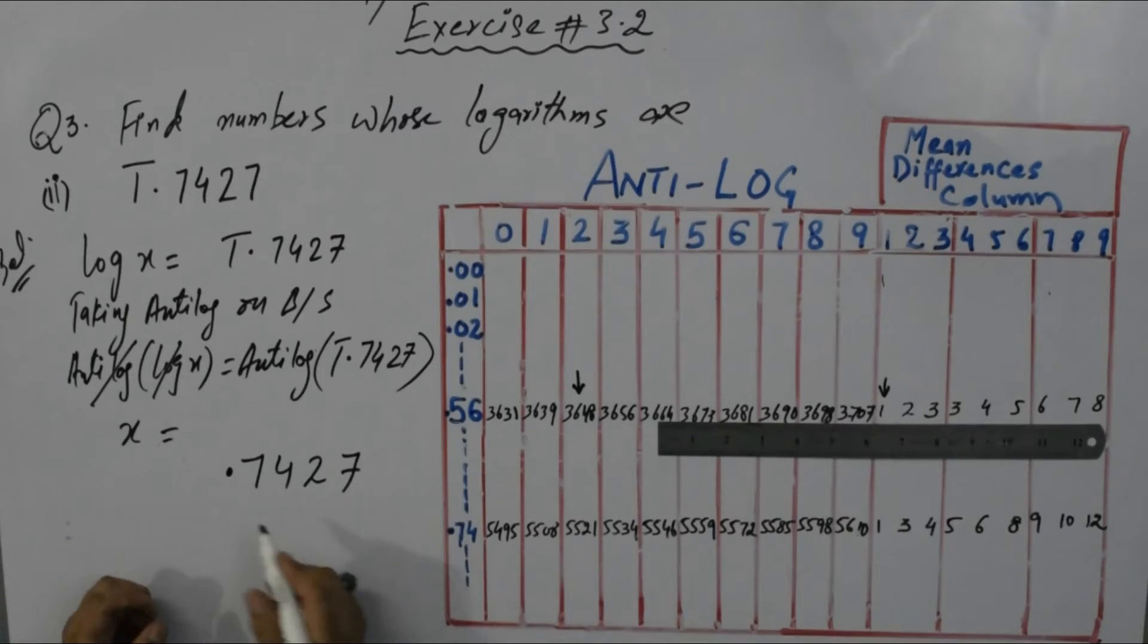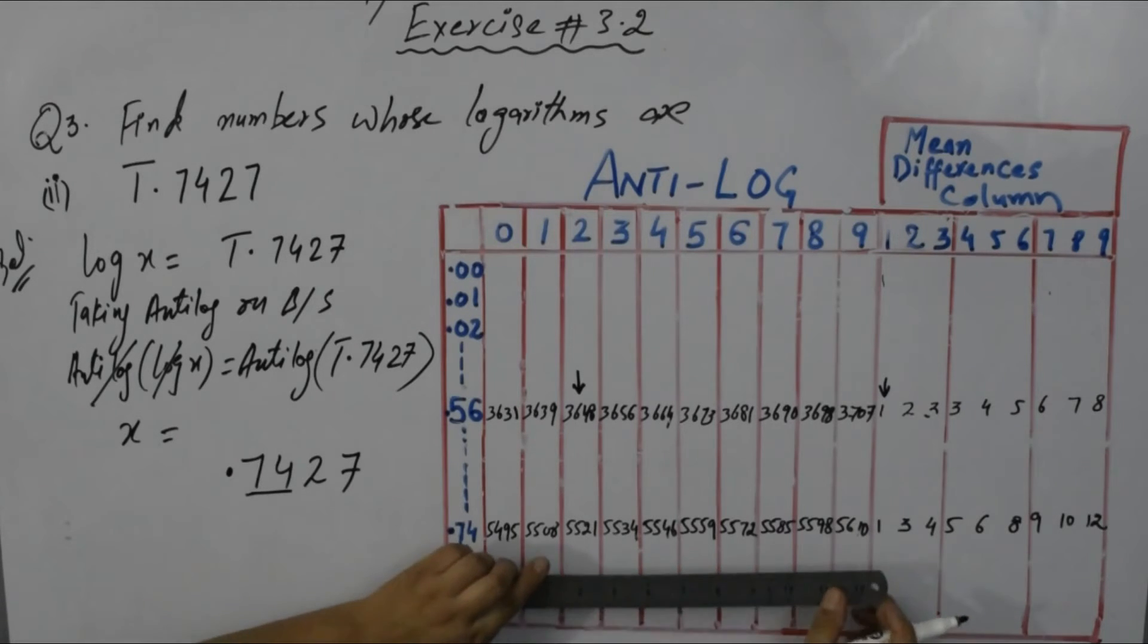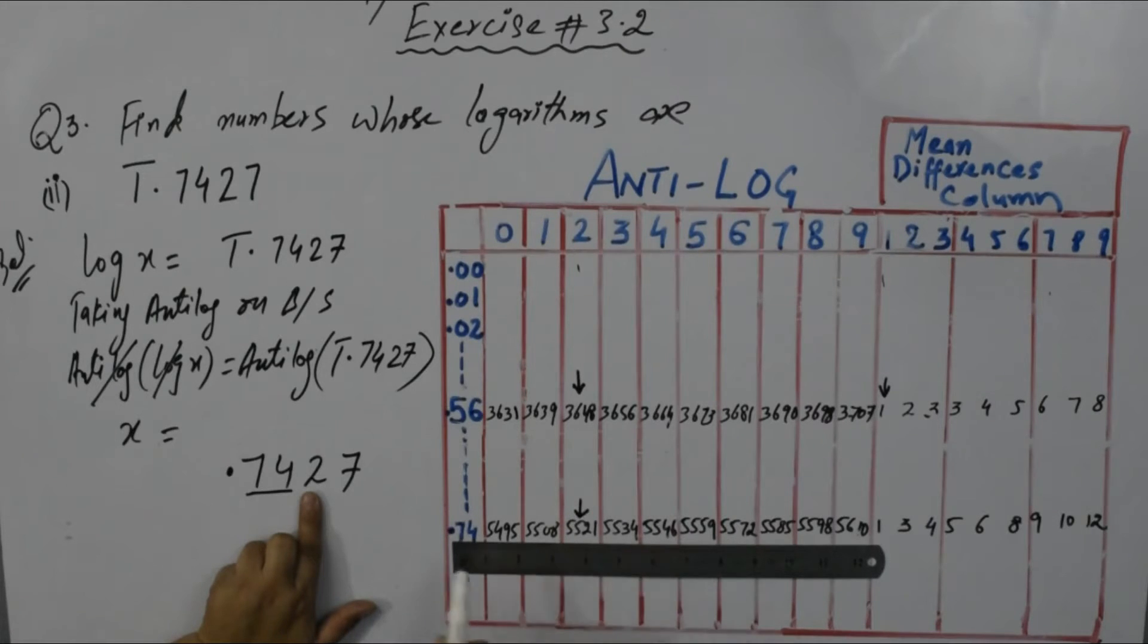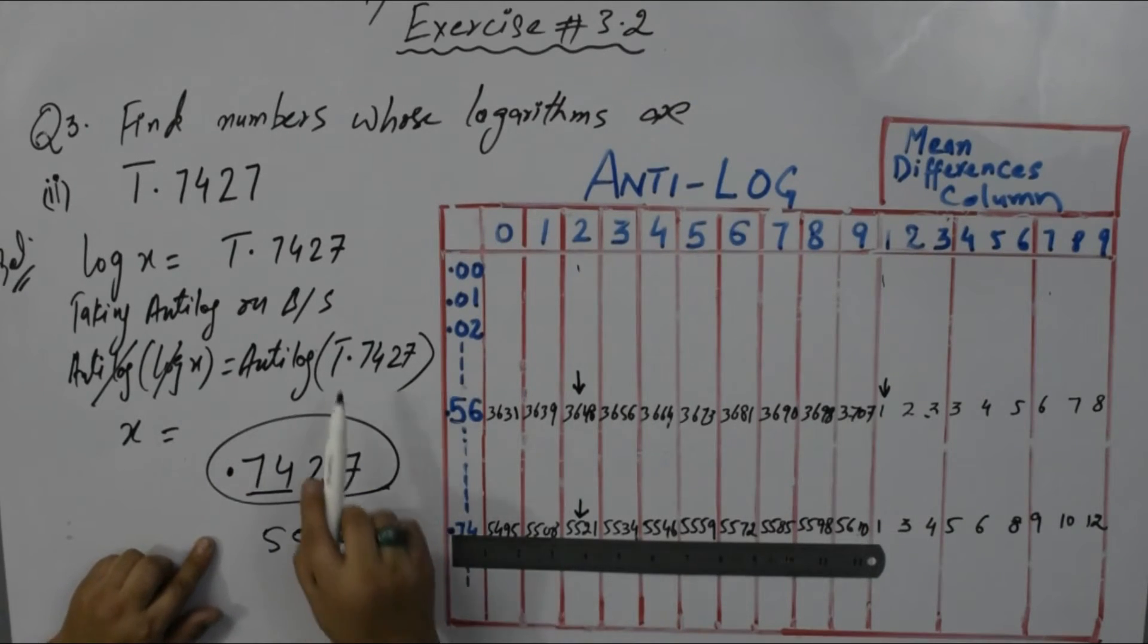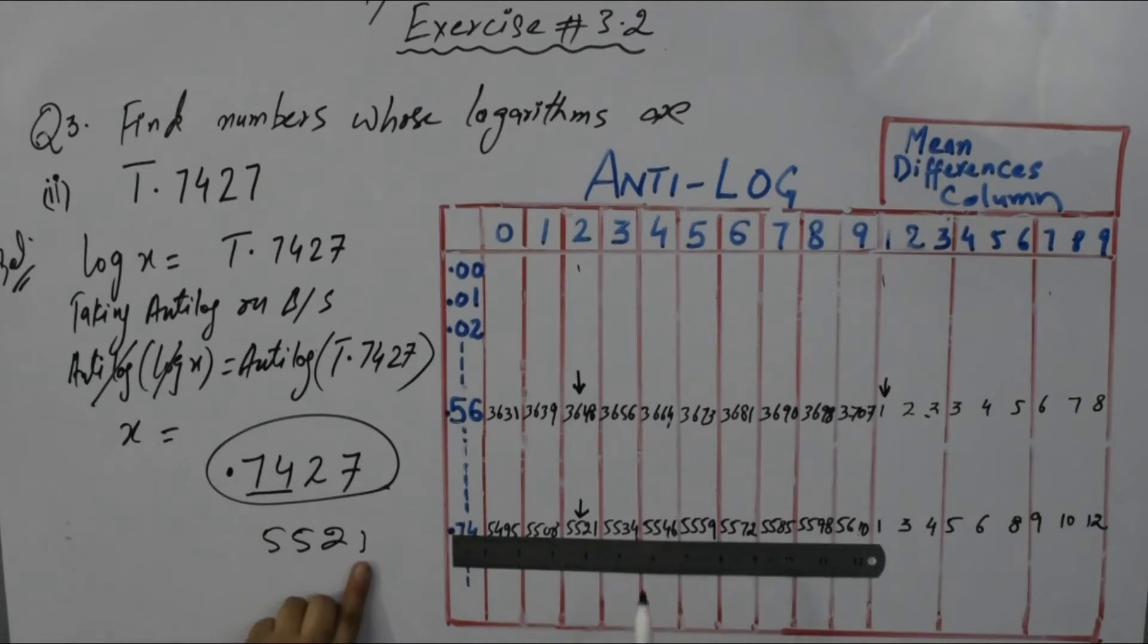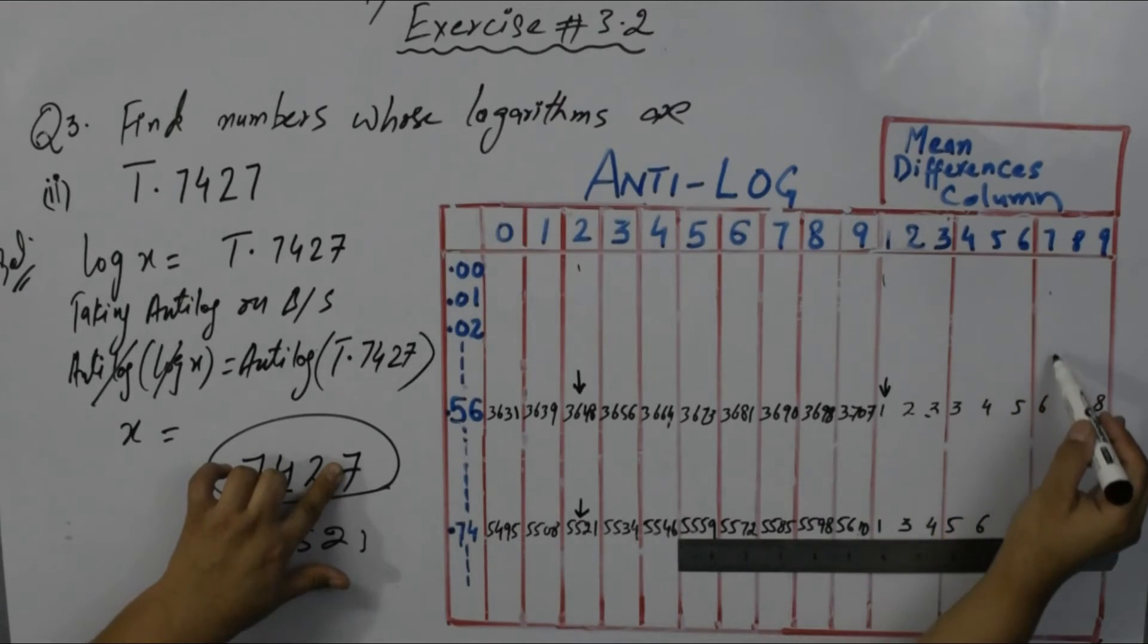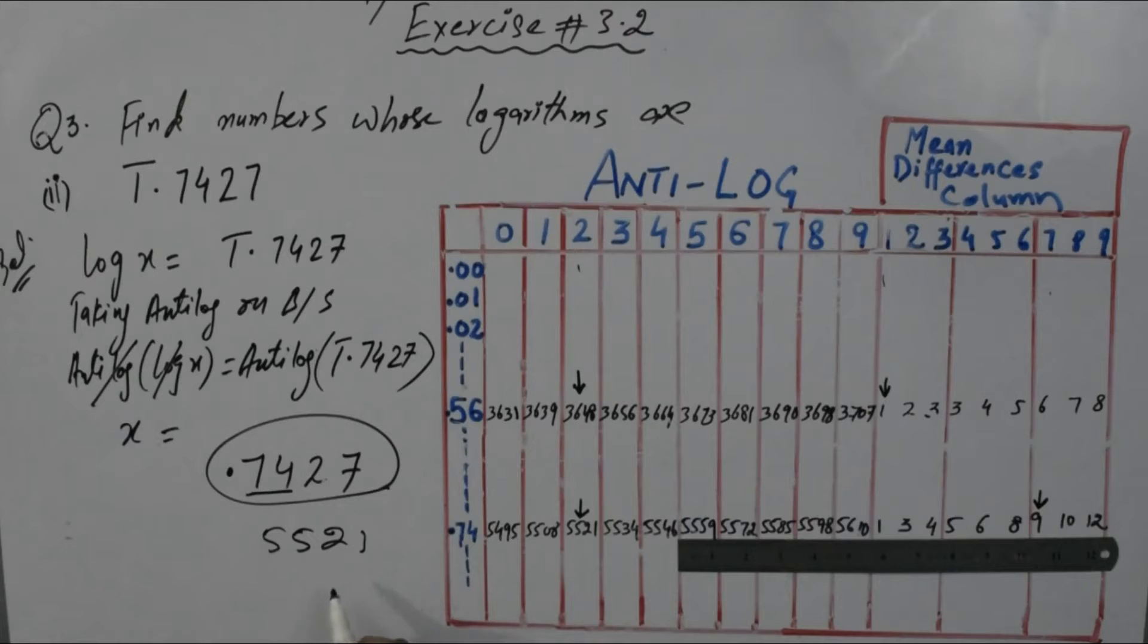Log and anti-log cancel with each other, so x equals this. Leave this characteristic portion, we will place decimal location. It's 0.74 to 7. Same as question 1 and 2: first two parts, two digits only - 0.74. Looking in second column, find 0.74. In front of 0.74 the value is 5521. This is mantissa - mantissa shows the number from anti-log table.